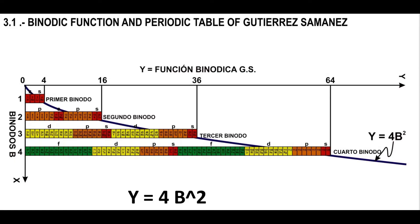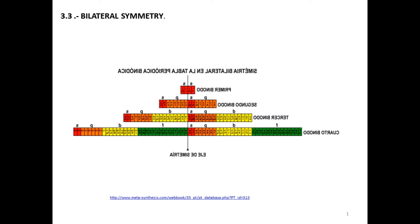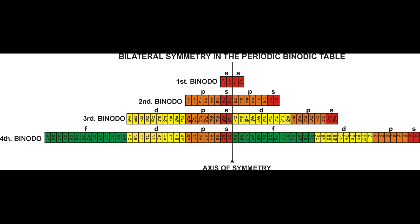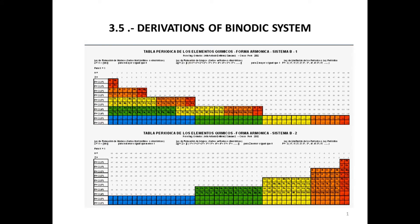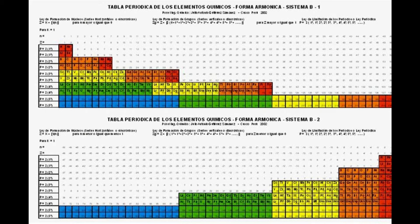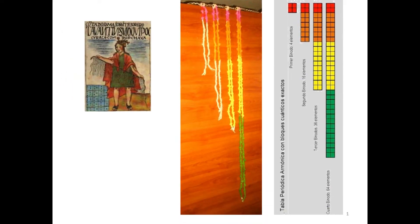This binautical table achieves mathematizing the periodic law even more. In its additive or cumulative form, it represents the z function, or uninterrupted series of the chemical elements, in the ordinated axis. By positioning the binodes on a central axis, the binautic table exhibits bilateral symmetry, deriving two periodic tables in the form of a stairway presented as mathematical matrices with the genetic laws. Two types of quipus, an accounting system of strings and knots of the ancient Peruvians, are also derived.